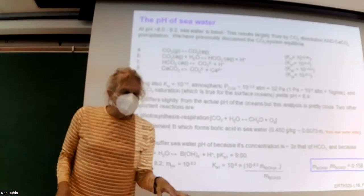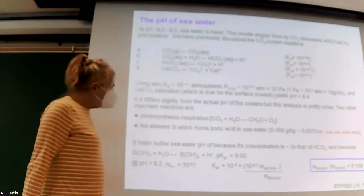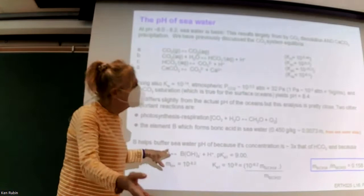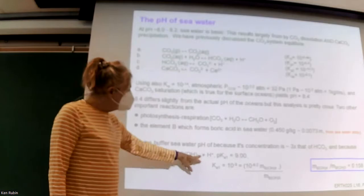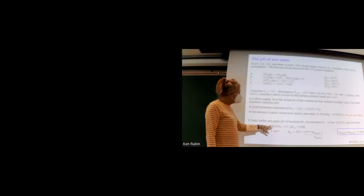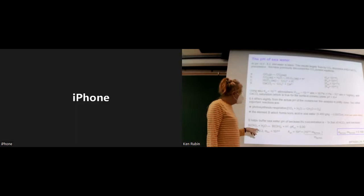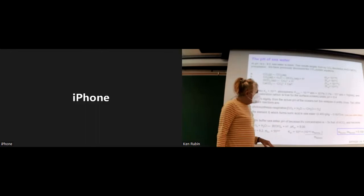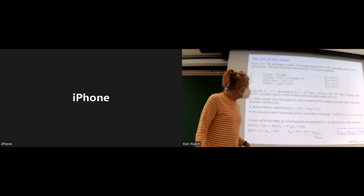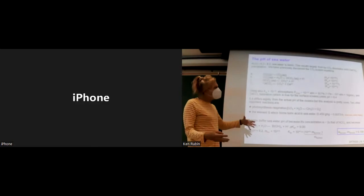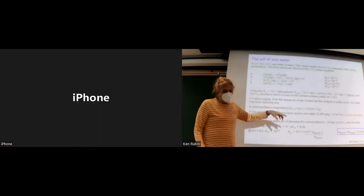A couple of other acids and bases in the ocean are important. One of them is the boric acid–borate anion couple. It's got a pKa of about 9 for this reaction. It doesn't look like a traditional acid because it's a Lewis acid, but it's behaving like an acid — B(OH)4 — and that pKa is about 9. At pH around 8.2, we're mostly in the acidic form rather than the basic form. This is one of the things that contributes to the pH of seawater, along with the role of calcium carbonate formation and precipitation of shells by organisms.